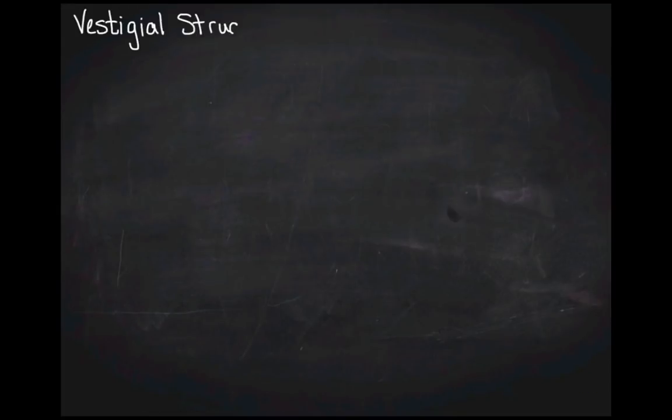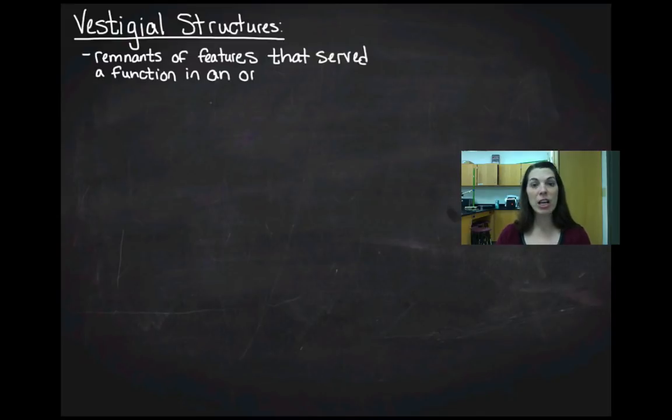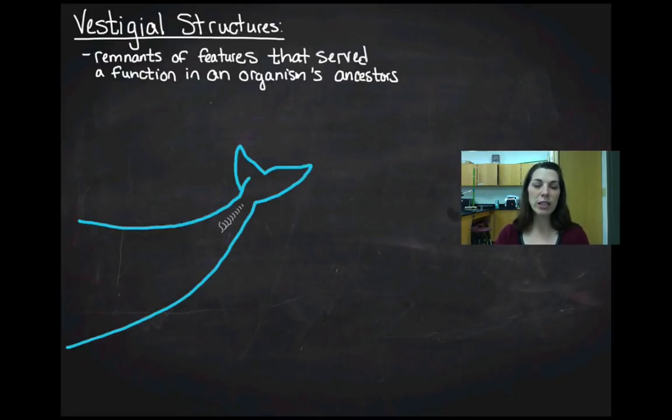The next thing I want to talk about with homology is the concept of vestigial structures. A vestigial structure is a remnant of features that served a function in an organism's ancestor but no longer serves a function. Let's look at the whale.